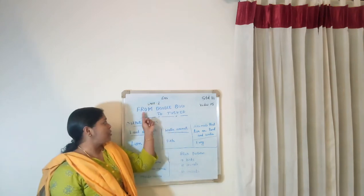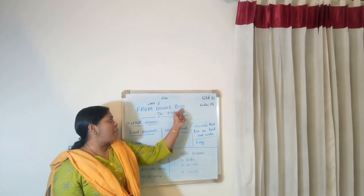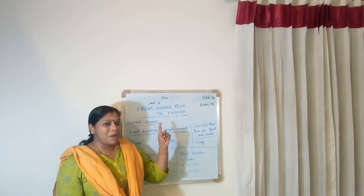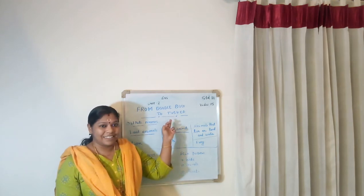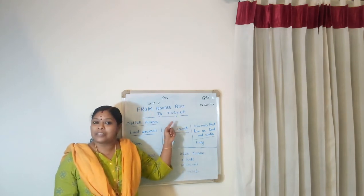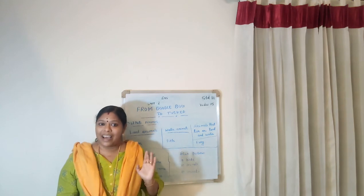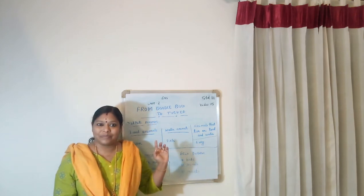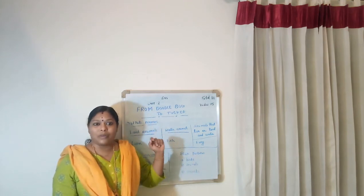The name of Unit 2 is 'From Doodle Bug to Tusker.' What does 'Doodle Bug' and 'Tusker' mean? Look at your dictionary and find out the meaning. If you are not getting the meaning, call me and I will send it. But first, you try to find out the meaning yourself — then it will always stay in your mind.